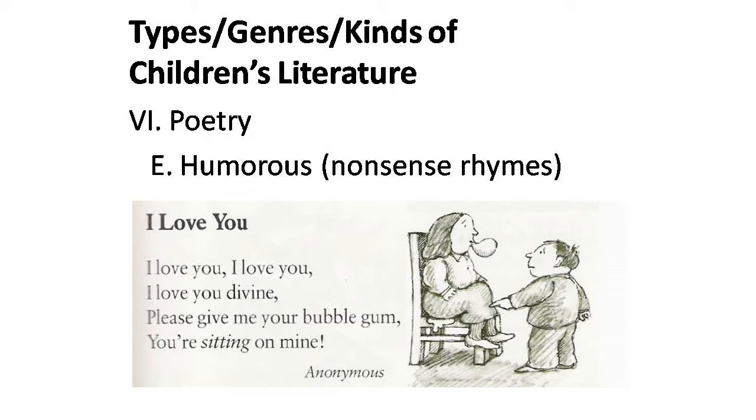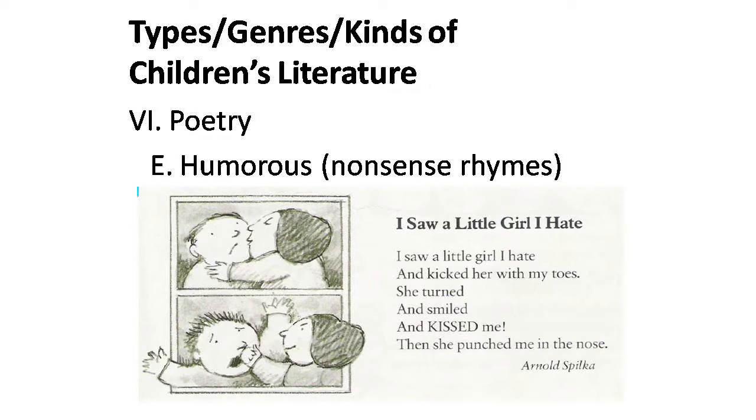Look at this Shel Silverstein poem: 'I love you, I love you, I love you divine. Please give me your bubble gum — you're sitting on mine.' You can hear the child's voice and mischief. And: 'I saw a little girl I hate and kicked her with my toes. She turned and smiled and kissed me and she punched me in the nose.' There's a stage where boys hate girls and vice versa — children really go through that stage.